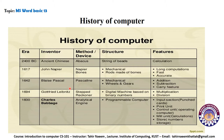After Napier's Bones, another device called the Pascaline was introduced, developed by Blaise Pascal in 1642 and named after him. It was mechanical with wheels and gears, used for addition, subtraction, and carry operations — improving upon the earlier devices which lacked the carry feature.